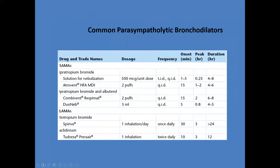Anticholinergics as well — your short-acting muscarinic agents, SAMAs. You have ipratropium bromide or Atrovent, your combo drugs like Duoneb — ipratropium and albuterol — and then your long-acting agents like Spiriva and some other medications.